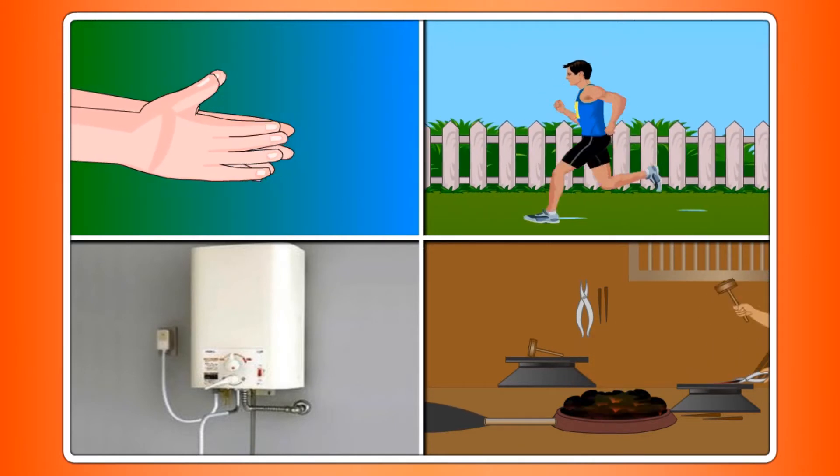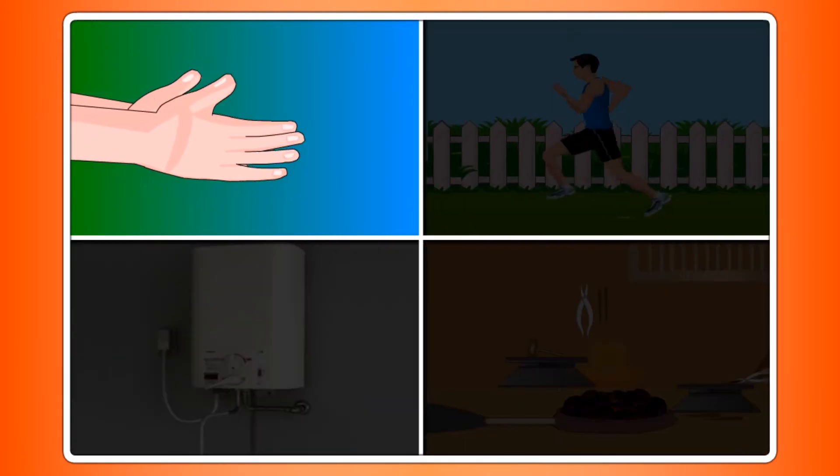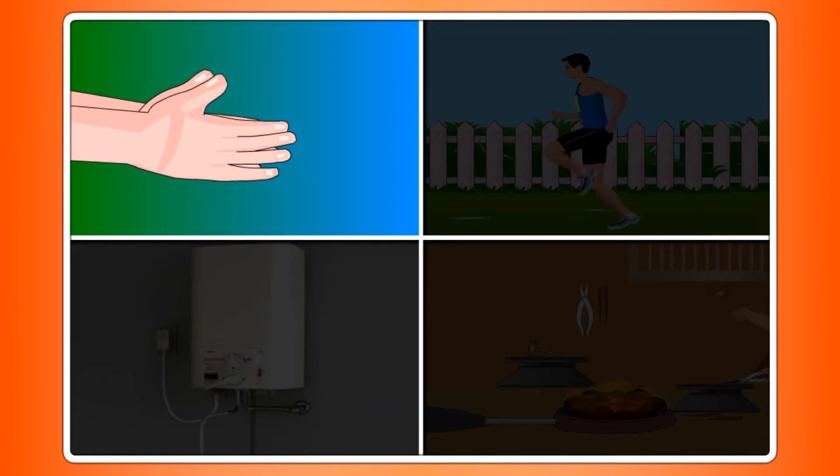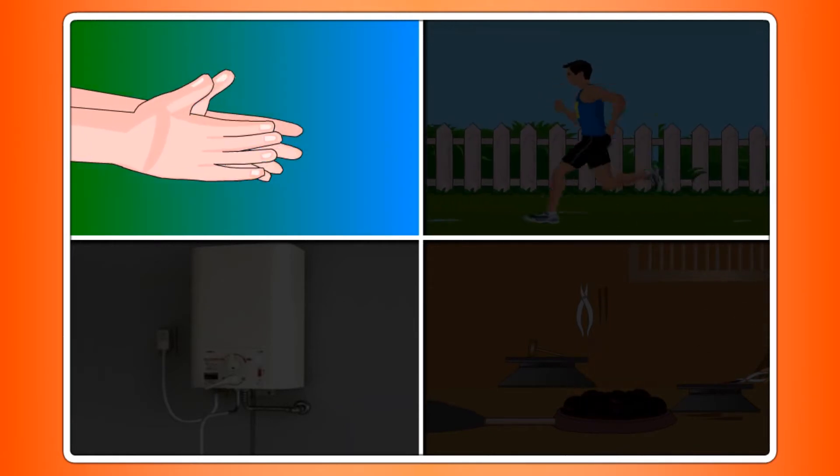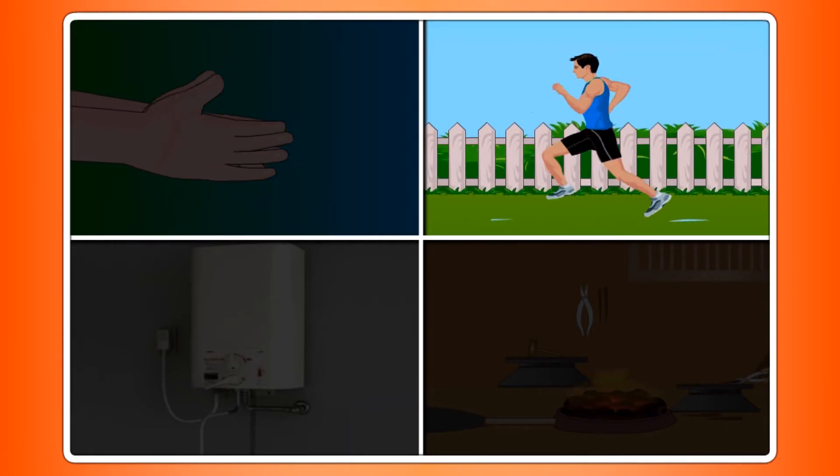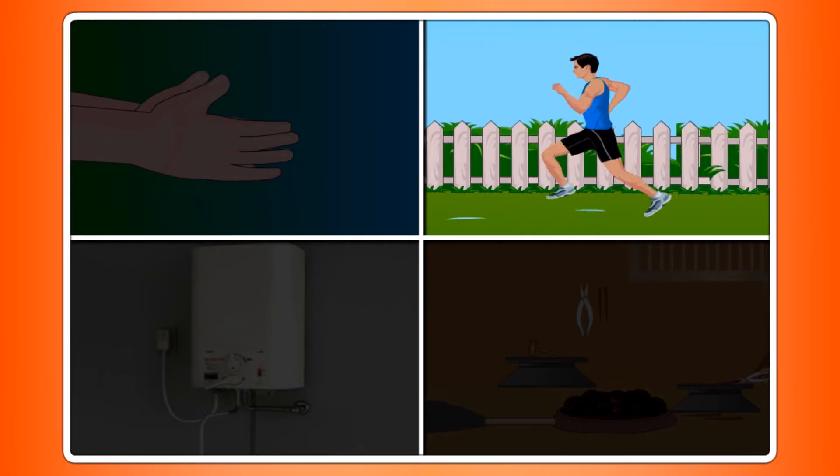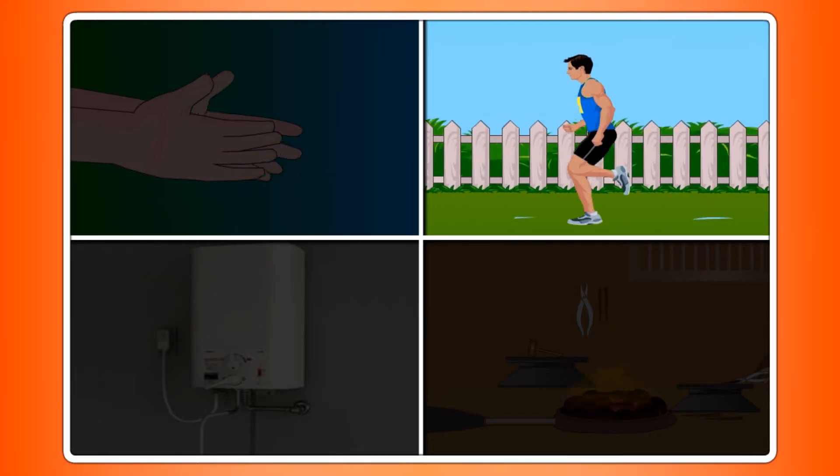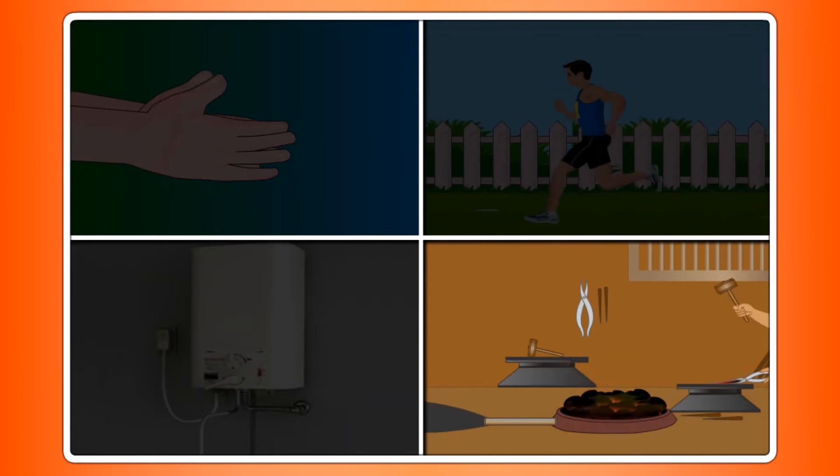Different types of energy change into heat. When you rub your hands, they become warm because friction generates heat. When you run or do any other strenuous exercise, heat is generated in your body and you start sweating. Burning of fuels also generates heat.